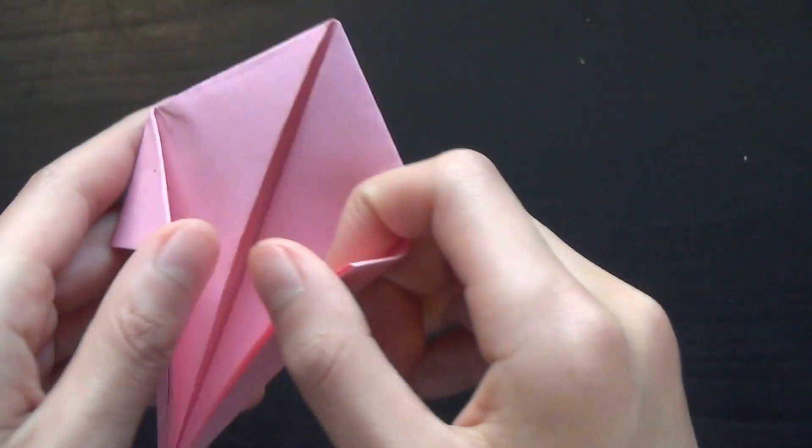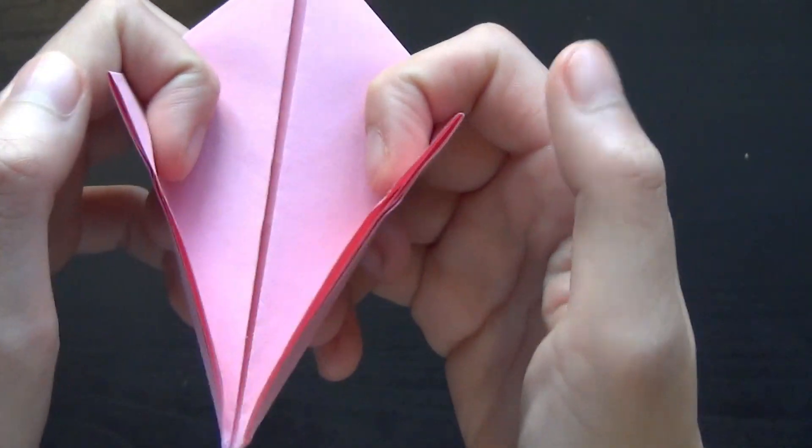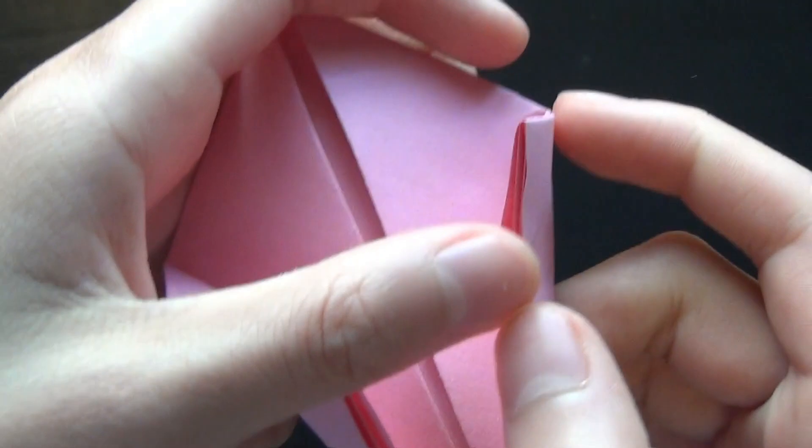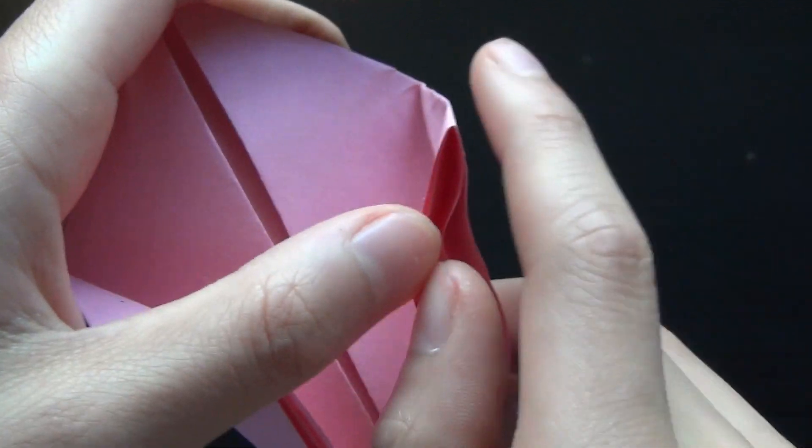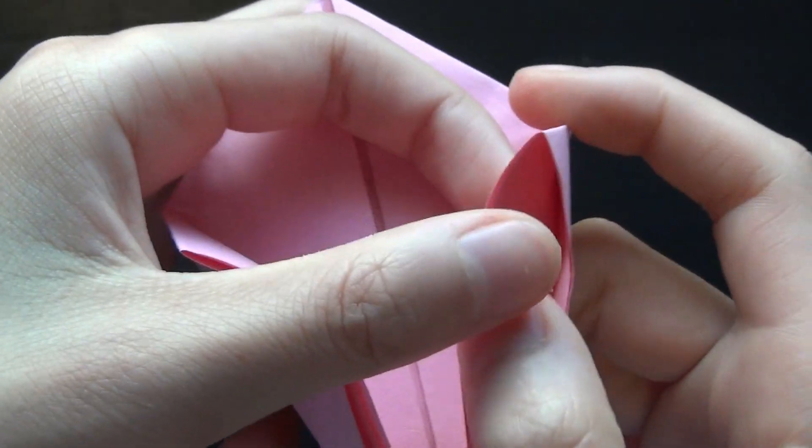Now you want to open these up so that they face you, and split these in half so that there's two flaps on each side. As you can see, there's two here and two here.